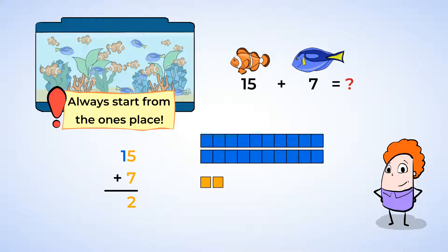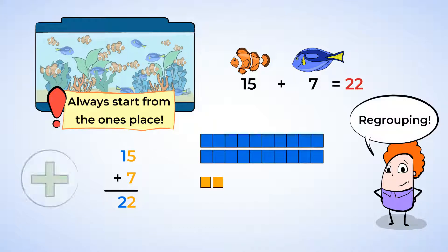So, if we add them all together, we have two 10 sticks. So, put a 2 in the tens place. This shows that 15 plus 7 is 22. Nice work! We used regrouping to solve this addition problem. There are 22 fish in that tank.